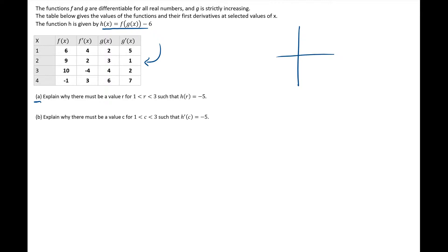The Intermediate Value Theorem states that if you have some function and it is continuous, the function passes through every y-value from your two endpoints — it doesn't skip over anything. However, that is only the case if the function is continuous. So on an AP test, you have to be able to satisfy the conditions of that theorem. If you're going to use the Intermediate Value Theorem, you have to satisfy the condition that the function is indeed continuous.